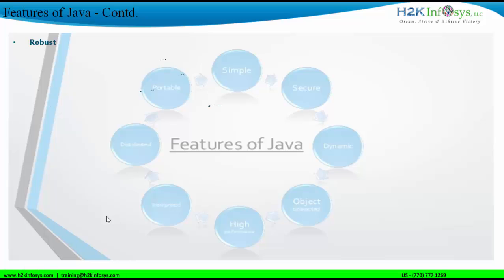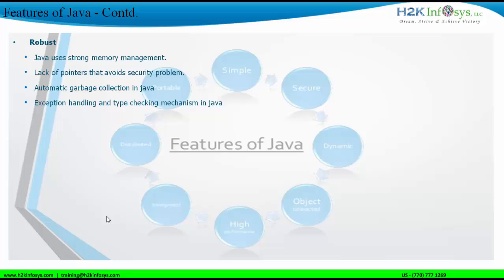Java is a robust language because it has strong memory management, which comes from object-oriented programming concepts and automatic garbage collection. There are no pointers in Java, and the lack of pointers means there are no associated security problems, making Java robust. Automatic garbage collection handles memory leaks automatically, keeping application performance strong. Java also has exception handling, which handles caught and uncaught exceptions. We will see exception handling and type-checking mechanisms at a later point.